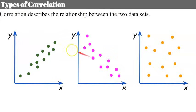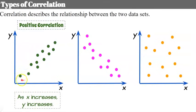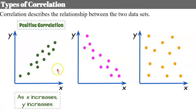Let's talk about the three types of correlation you can observe in a scatter plot. Correlation describes the relationship between two datasets. Our first graph shows a positive correlation because as X is increasing, Y is also increasing. If you consider each one of these ordered pairs, as the X value increases, the Y value gets higher.